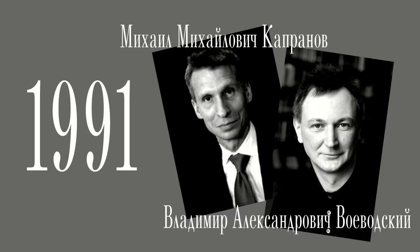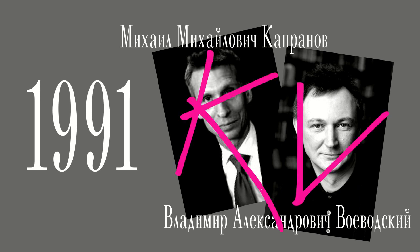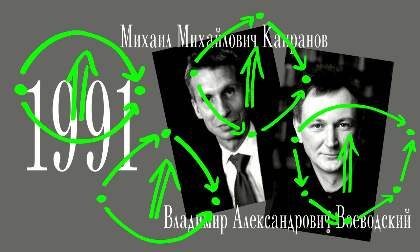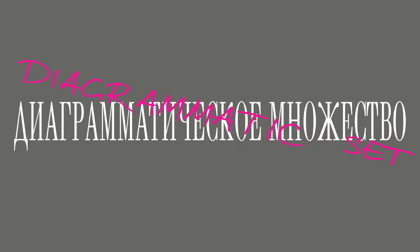In 1991, Mikhail Kapranov and Vladimir Voevodsky, from now on KV, considered a very rich shape category containing globes, simplices, cubes, and many other shapes. Presheaves on this category were called diagrammatic sets.